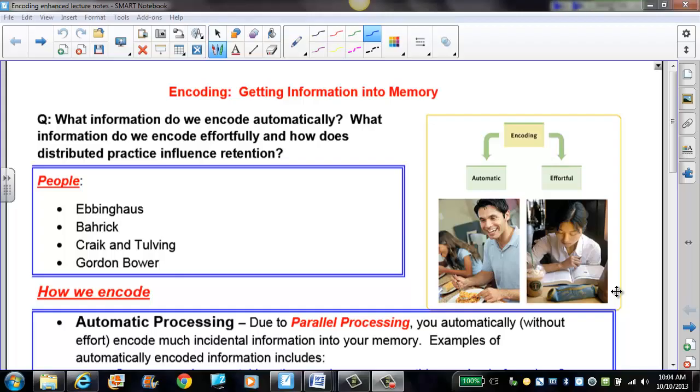Okay, so we are recording. Second hour AP class, we're going to review our notes on encoding. We read about this last night, and to guide us, I put a few pre-questions up here so we could use these questions to organize the information that we come across in our text and Cornell notes. Those questions were basically, what information do we encode automatically and what is automatic processing? What information do we encode effortfully, and how does distributed practice influence retention or the ability to keep information in our memory systems?